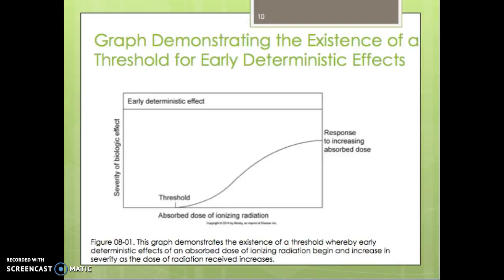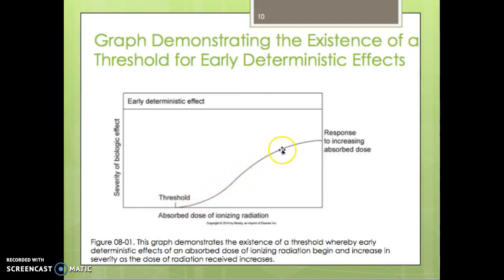This graph demonstrates the existence of a threshold for early deterministic effects. You can see the severity of the biological effect on one axis and the absorbed dose of radiation on the other. There is a threshold, and we'll talk about what that threshold typically is for the human body. The graph demonstrates that early deterministic effects begin and increase in severity as the absorbed dose of ionizing radiation is increased — biological effect goes up with increasing absorbed dose.